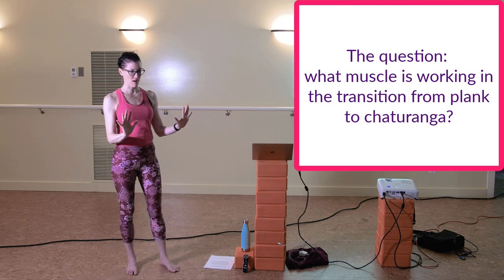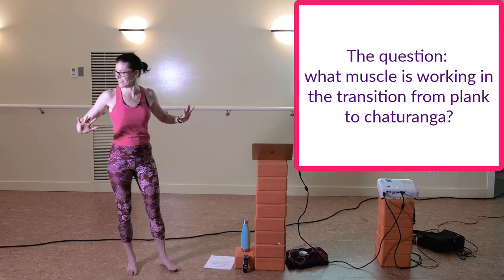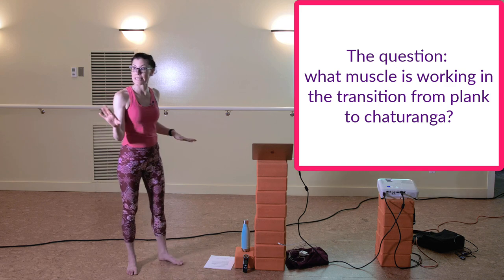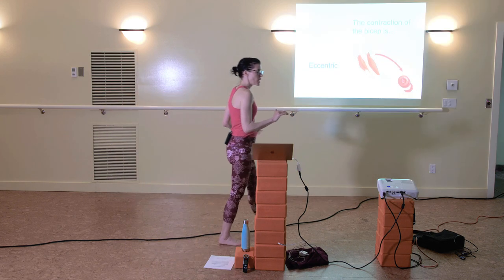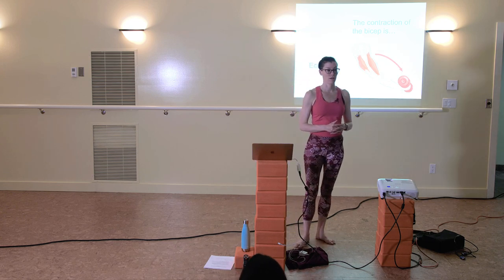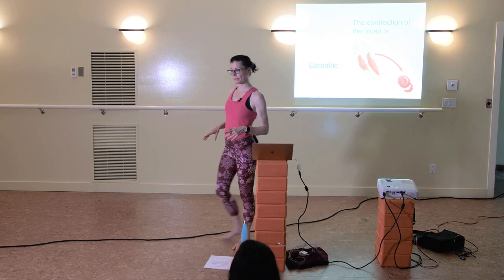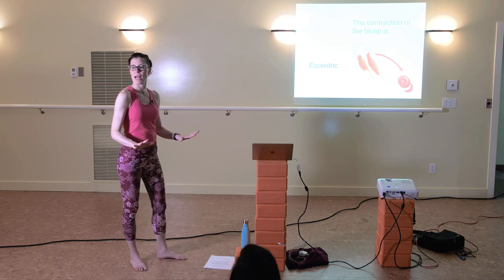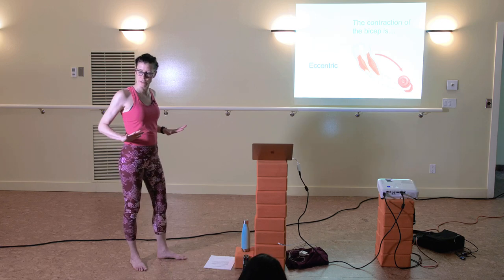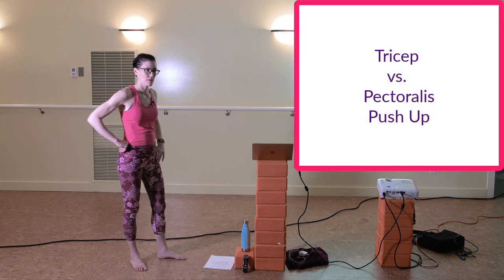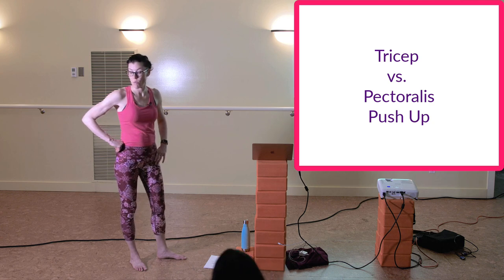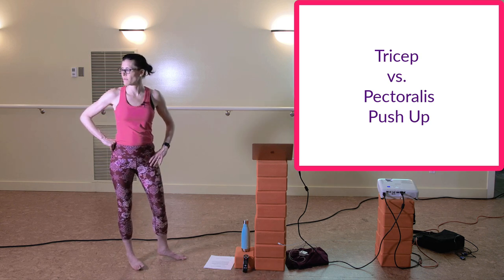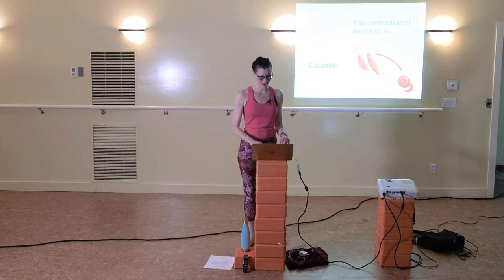We're always doing tricep push-ups in yoga rather than a wider pec push-up which is so much easier. Knees down, hands slightly forward, shoulders over wrists — this is a modified push-up, not a 'girl's push-up.' Let the elbows move straight back, press the inner edges of your hands down, draw your shoulders onto your back, and lower halfway down. Feel the triceps. Now try hands wide, elbows wide — feel how different that is.